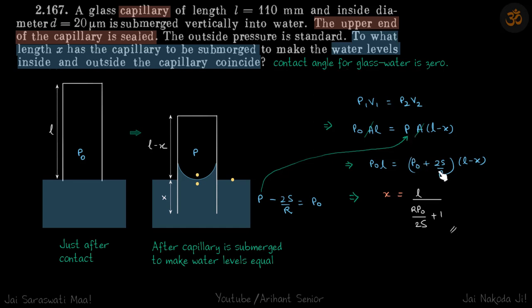p is p0 plus 2s by r, A into l minus x. So A will get cancelled, one equation and single variable x, you will get your answer.